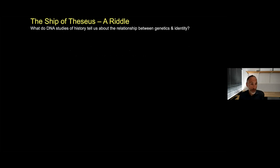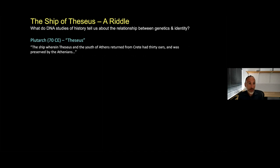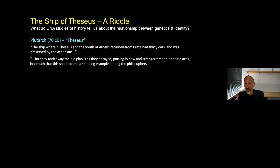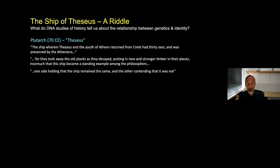I'm going to end with a riddle from ancient Athens. It's motivated by the question of what DNA studies of history tell us about the relationship between genetics and identity. I'll quote Plutarch, a Roman historian and philosopher, who wrote that the ship where Theseus and the youth of Athens returned from Crete had 30 oars, and the Athenians preserved it. They took away old planks as they decayed and put in new and stronger timber in their places, insomuch that the ship became a standing example amongst the philosophers. People asked: is it the same ship? One side holding it remained the same, the other contending it was not.